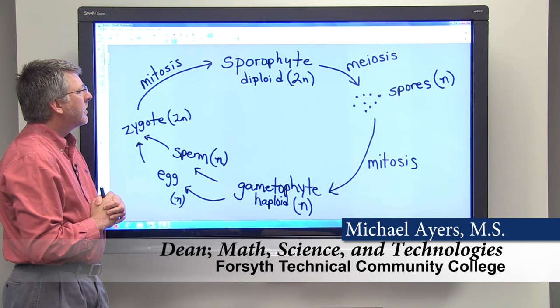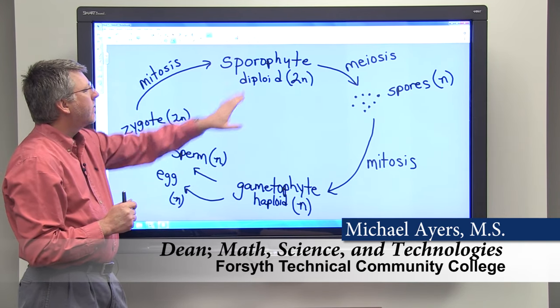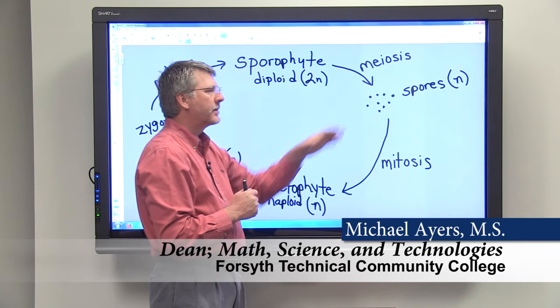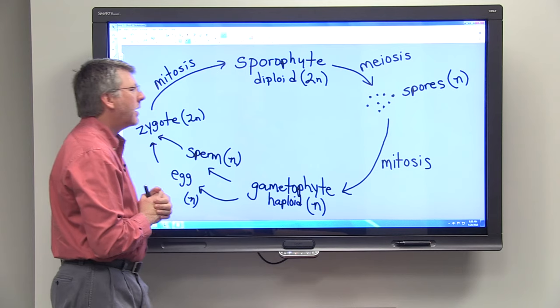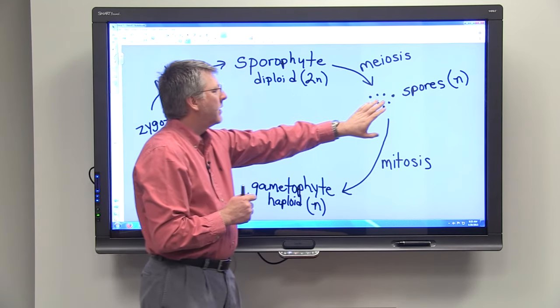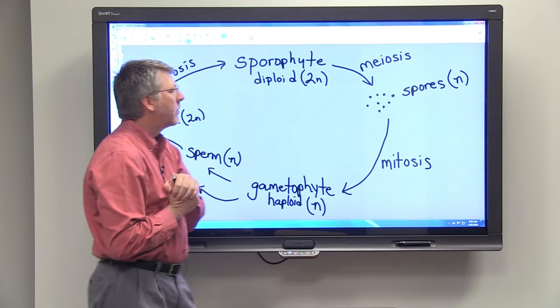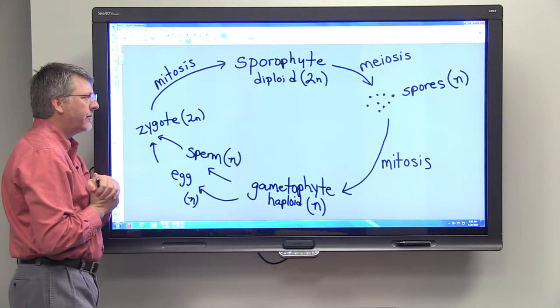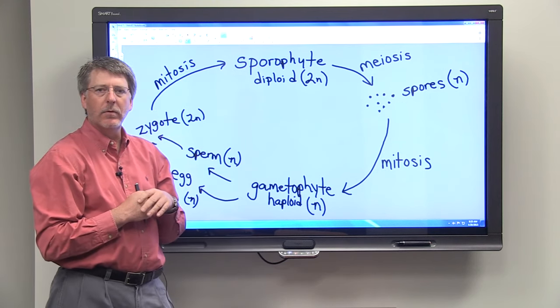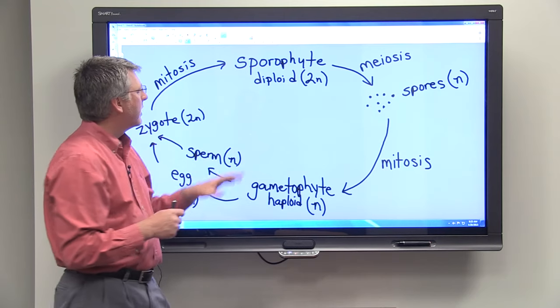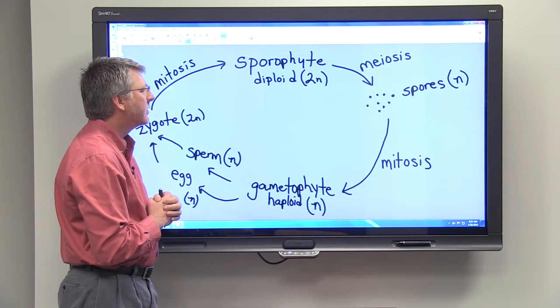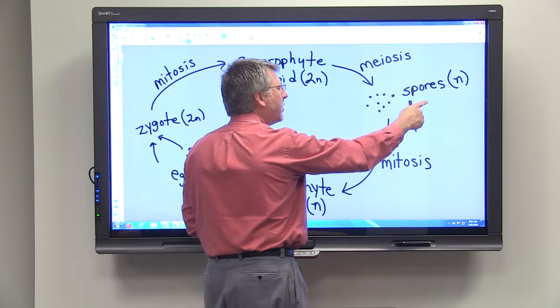Now in the sporophyte generation, there are special structures where meiosis takes place. And when meiosis takes place, we have a diploid cell that divides by this process of meiosis and produces haploid spores. Just in general, remember that sporophytes produce spores by meiosis. These spores are haploid.